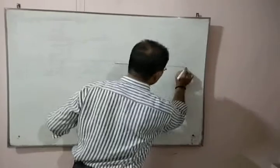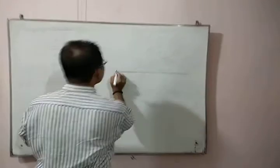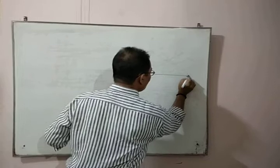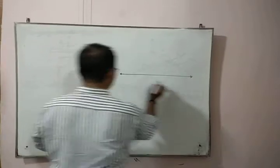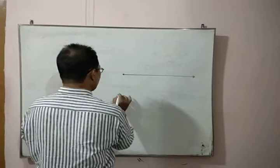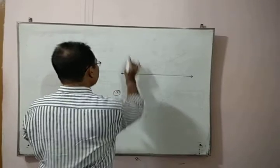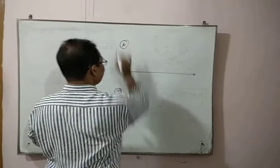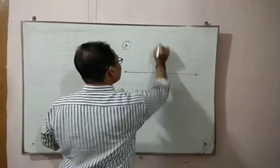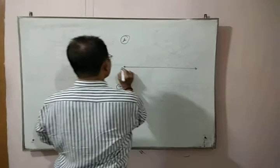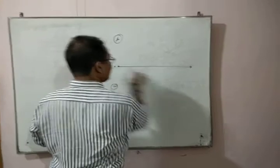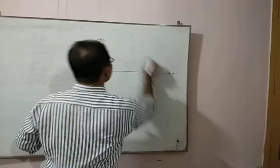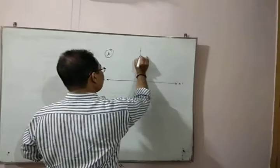Suppose this is a borderline dividing two optical media. Suppose this is your medium A and this is B. X-X dash is the borderline. Suppose this is your normal.